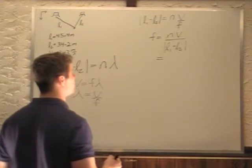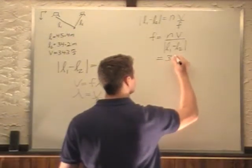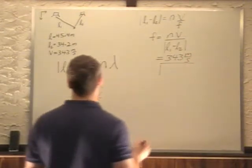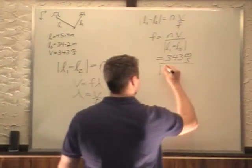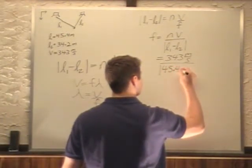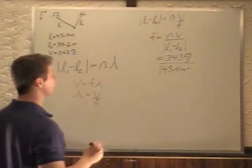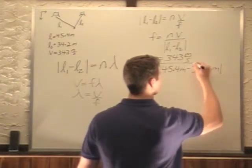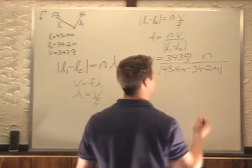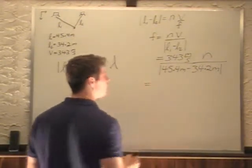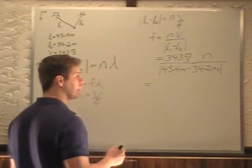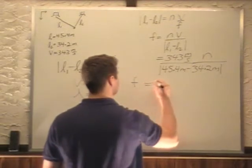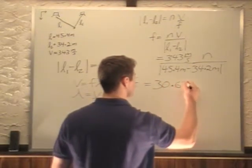I'm going to start throwing in some numbers now. So V is 343 meters per second, divided by L1 minus L2. L1 is 45.4 meters, minus 34.2 meters. And we still have our integer N there. So we plug all that in, subtract this, and then actually divide. We're going to get F is equal to 30.625.